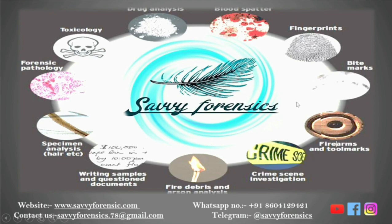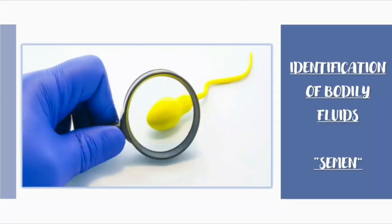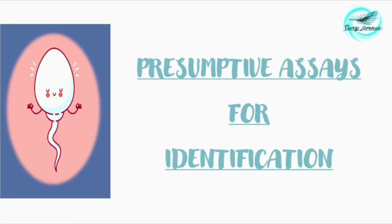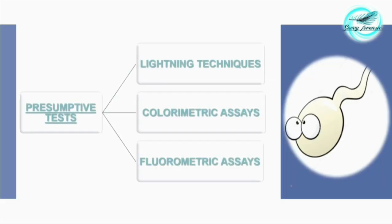Welcome back to Savvy Forensics. In this video we'll be looking at the identification of bodily fluids — specifically semen — and the presumptive assays for its identification. There are basically three preliminary tests: first is the lighting techniques, second is the colorimetric assays, and third is the fluorometric assays.